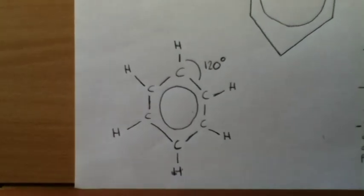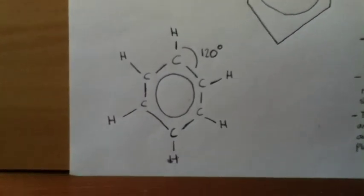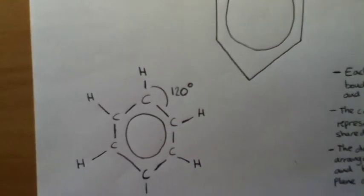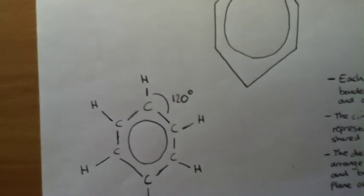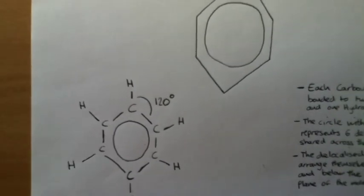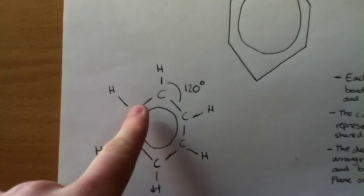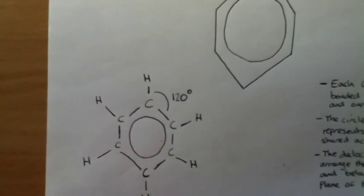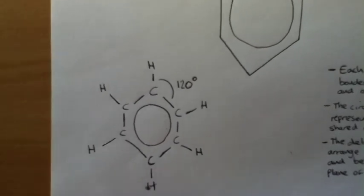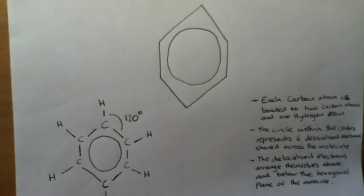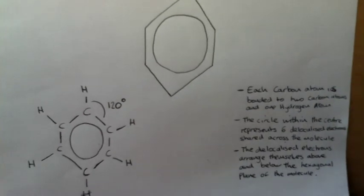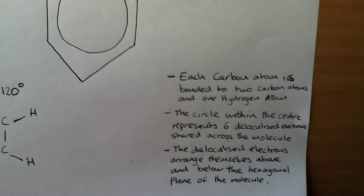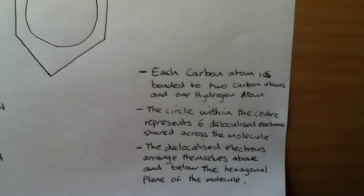Another question which comes up quite a lot is explaining what the rings are within the centre. These are representations of six delocalised electrons which come from each carbon atom within the ring. We represent this in a particular way, which I'll show you in a second.